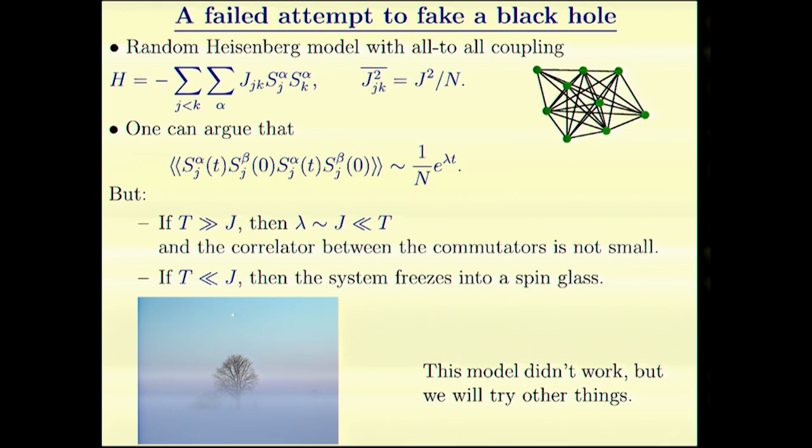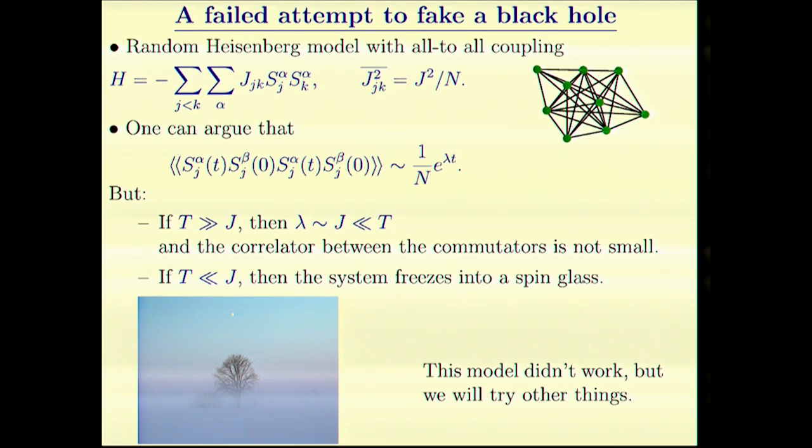I haven't computed this correlator actually, but I followed the argument by Schenker and Stanford and Roberts and Susskind. The same line of argument. This is the result. It's some Lyapunov exponent. However, when the temperature is higher than the interactions, then the Lyapunov exponent is small compared to the temperature. If the temperature is low, we might have a better chance, but this particular system freezes into a spin glass.